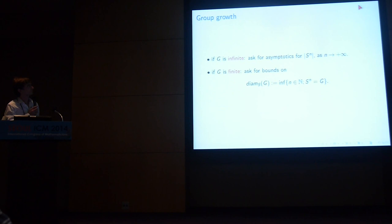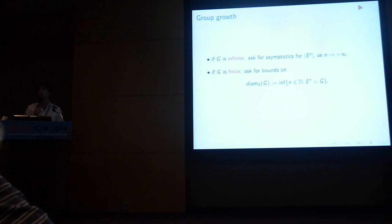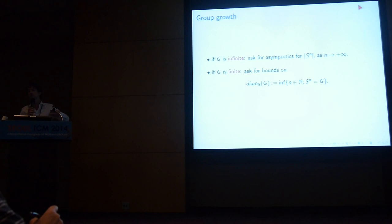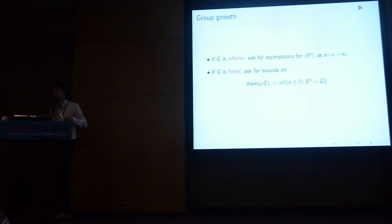When I talk about group growth, a group could be infinite or finite — both cases are interesting. If you start with an infinite group, I want to understand the asymptotics of the number of elements in S to the n. But if the group is finite, then you ask for bounds on the diameter of the group: the smallest n such that every element can be expressed as a product of n elements from the generating set.